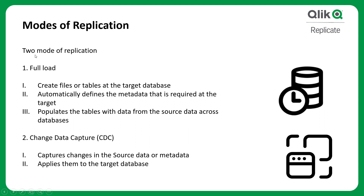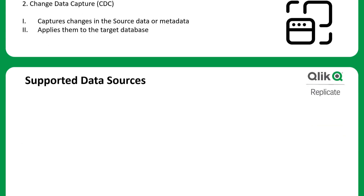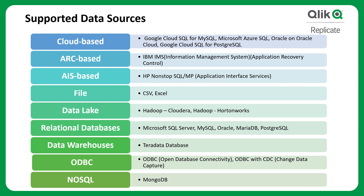The two modes of replication are Full Load and Change Data Capture. Full Load loads data completely from source to target, automatically creates files or tables at the target database, defines the required metadata at the target, and populates the tables with data from the source. Change Data Capture captures changes in the source data or metadata and applies them to the target.